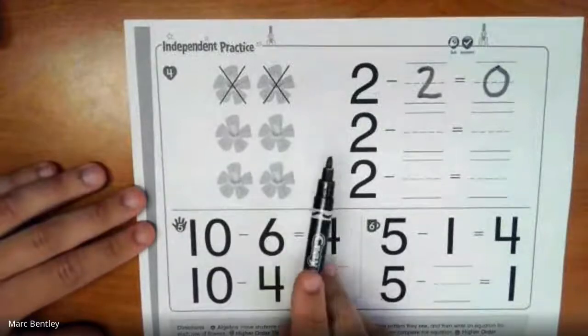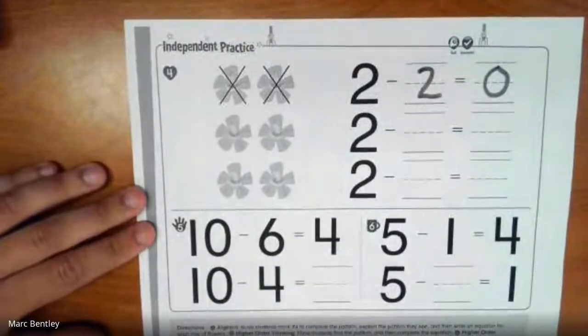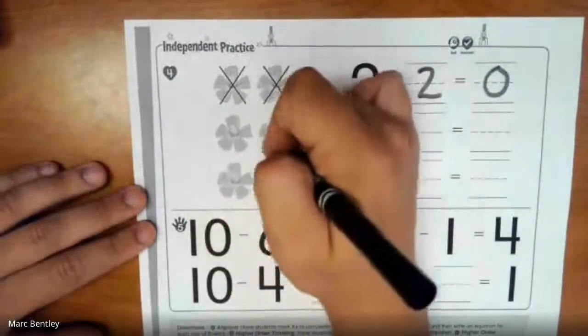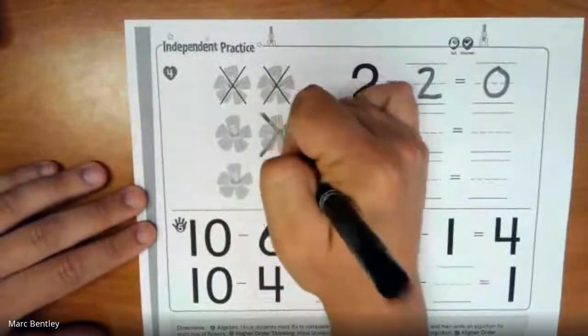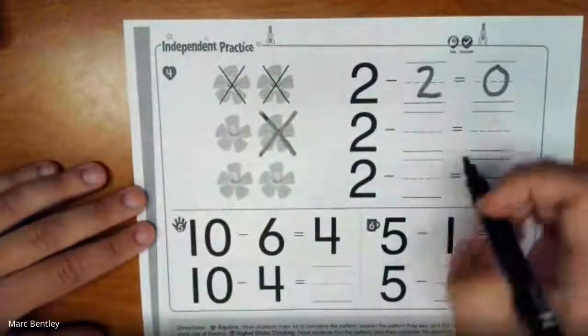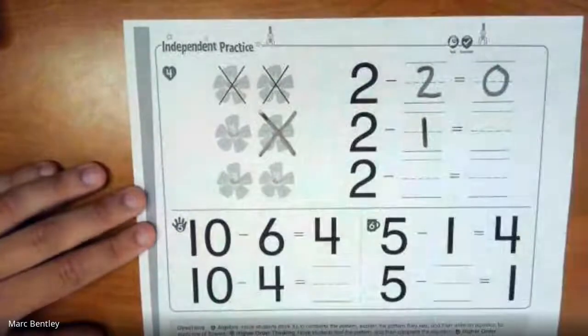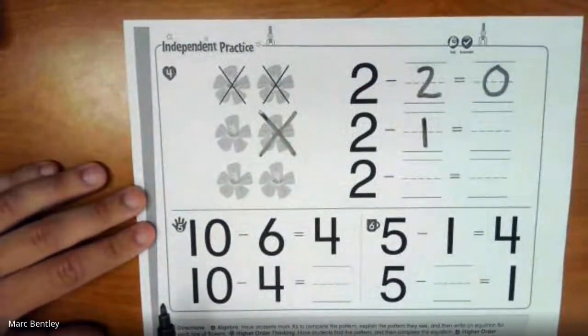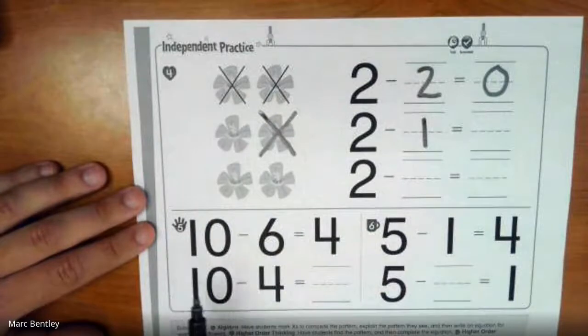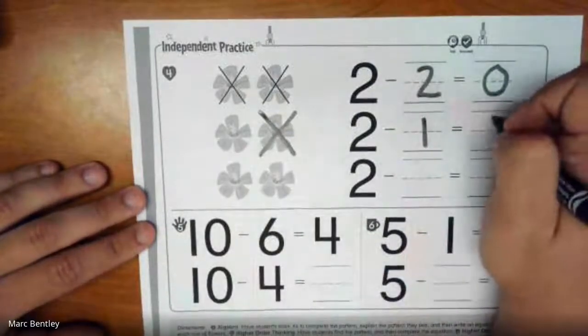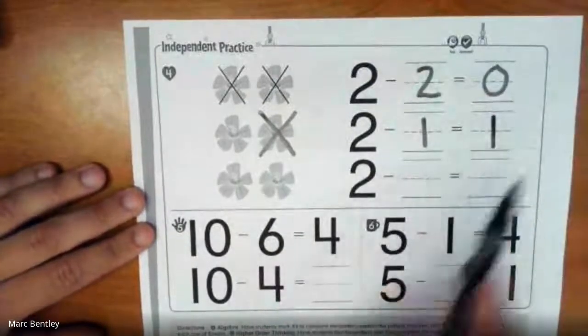Moving down. This time we're just going to take 1 of them away. So we had 2. We subtracted 1. And how many do we have left? As you can see, we have 1 left. So 2 minus 1 equals 1.